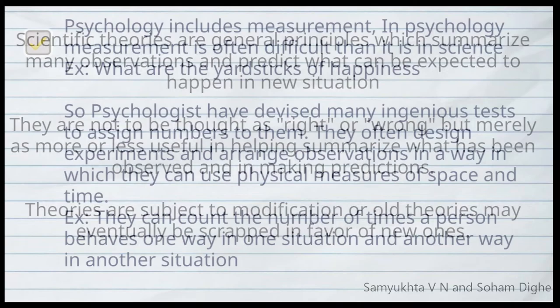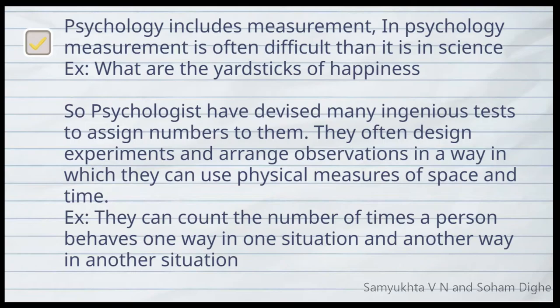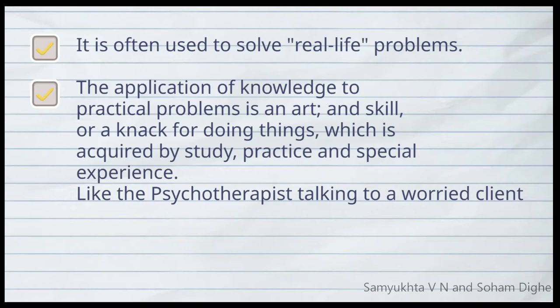Psychology includes measurement. In psychology, measurement is often more difficult than it is in other sciences — for example, what are the yardsticks of happiness? Psychologists have devised many ingenious tests to assign numbers to such things. They often design experiments and arrange observations so they can use physical measures of space and time — for example, counting the number of times a person behaves one way in one situation versus another.